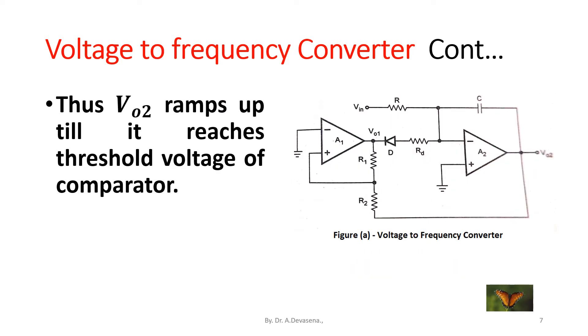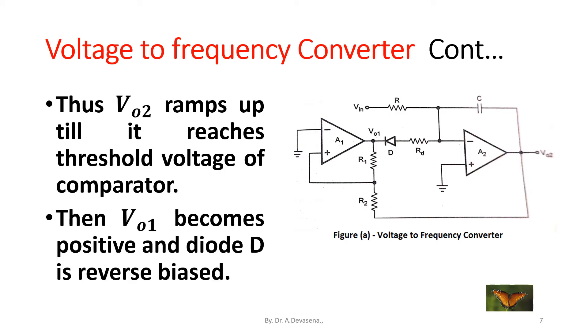Thus V_o2 ramps up till it reaches the threshold voltage of the comparator. Then the output of the op-amp A1, V_o1, is becoming positive and the diode D is reverse biased.